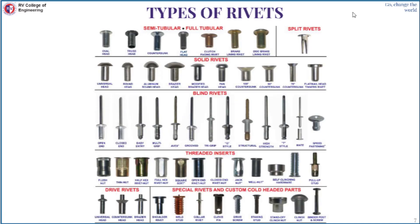What we have seen is a solid rivet. Similarly, in the aerospace field you can find hollow rivets, also called tubular rivets. We also have blind rivets and threaded rivets, depending on the application. Wherever weight reduction is needed, tubular rivets are used, but you must ensure that the load acting on those rivets is minimal, since solid rivets can sustain very high loads. Split rivets are used for commercial purposes.